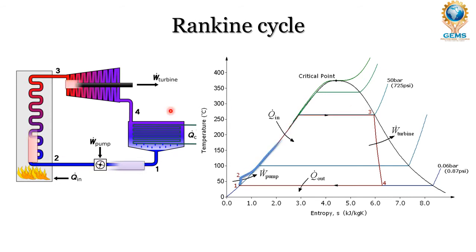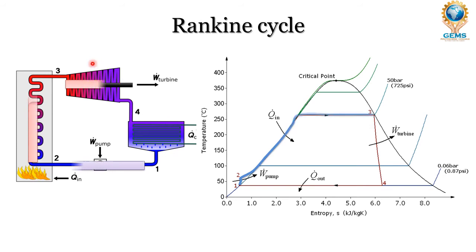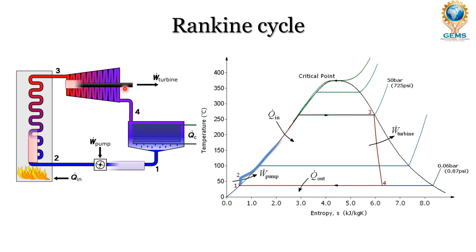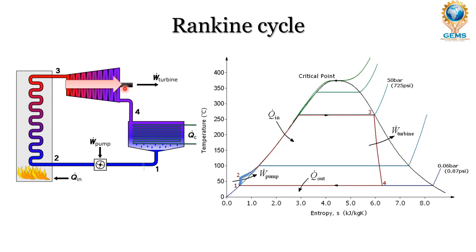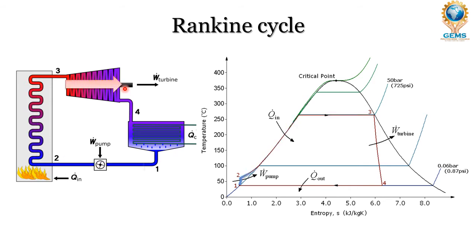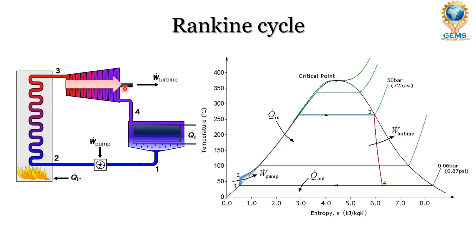The third process is 3 to 4 — it is the turbine work. During this turbine work, expansion occurs: high pressure is reduced to low pressure. The high pressure steam enters the turbine and rotates the turbine blades so that mechanical work output comes from the turbine, which reduces the pressure of the steam.